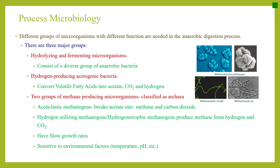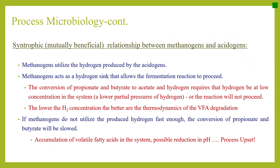Methanogens usually have slow growth rates and are very sensitive to environmental factors such as pH, temperature, etc. There is a syntrophic or mutually beneficial relationship between methanogens and acetogens. Methanogens utilize the hydrogen produced by the acetogens, acting as a hydrogen sink that allows the fermentation reaction to proceed. The conversion of propionate and butyrate to acetate and hydrogen requires that hydrogen be at low concentration in the system — a lower partial pressure of hydrogen is required for the reaction to be thermodynamically viable. The lower the hydrogen concentration, the better the thermodynamics of the VFA degradation.